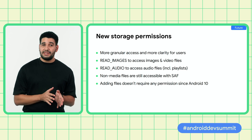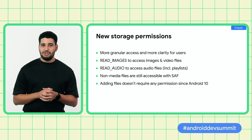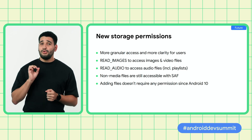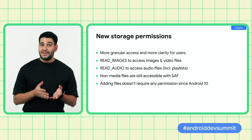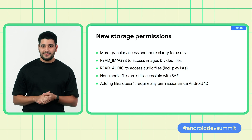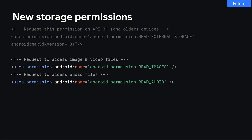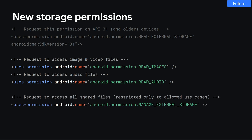We're also working on bringing more clarity for users and granularity for developers with new storage permissions. On the next version of Android, the new READ_MEDIA_IMAGES permission will allow you to read all images and videos on shared storage, while READ_MEDIA_AUDIO will allow you to read all audio files including playlist files like .m3u. Thanks to scoped storage, adding and editing your own files — whether media files or not — does not require any permission. Non-media files in shared storage are still accessible through the Storage Access Framework. To apply these changes in your manifest, set a Max SDK to API 31 on the Read External Storage permission and add the new permissions based on your app's features. Manage External Storage can be used for apps that have a core use case requiring broad access to files on a device, but keep in mind this permission is subject to the All Files Access Policy on Google Play.